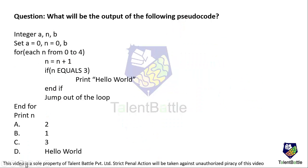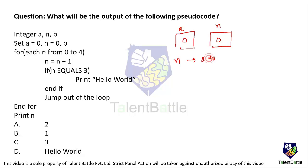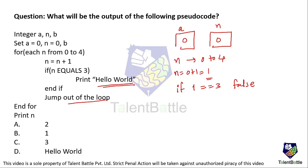Now let's discuss the next question. What will be the output of the following pseudocode? Integer a and n are given; a is set to 0 and n is set to 0. For each n from 0 to 4, we calculate n equals n plus 1 and check a condition. When n is 0, n becomes 0 plus 1 equals 1. If n equals 3 is false — since 1 does not equal 3 — the if condition is false and the loop breaks. So we print the value of n, which is 1. Option B, value 1, is the answer.